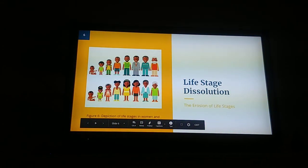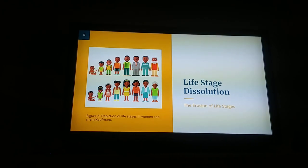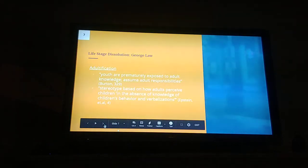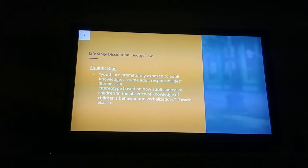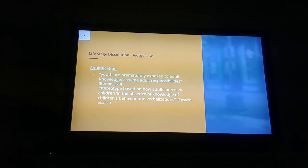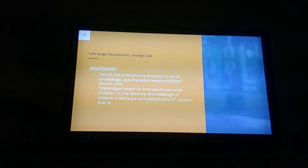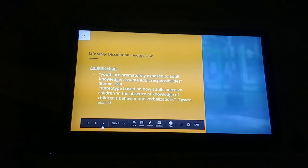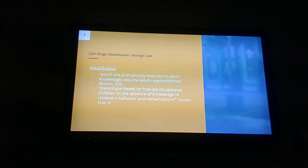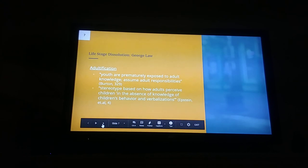Life stage dissolution is the erosion of life stages such as childhood, adolescence, and adulthood, and the blurring of the generational lines between them. An example of life stage dissolution, as explained by the Georgetown Law study, describes adultification as specifically applying to black girls: it is the ways in which youth are prematurely exposed to adult knowledge and assume adult responsibilities, and the stereotype based on how adults perceive children in the absence of knowledge of the child's behavior and verbalization. This second point is especially important, as the assumption that black girls are aggressive is applied to how adults understand black girls as children.